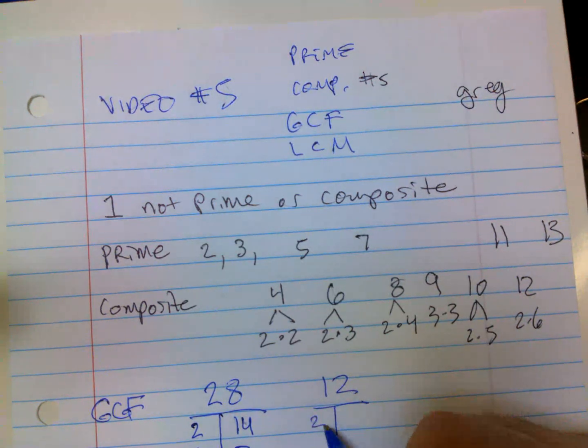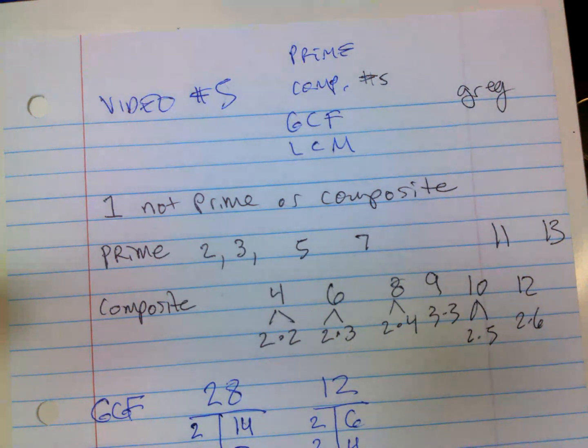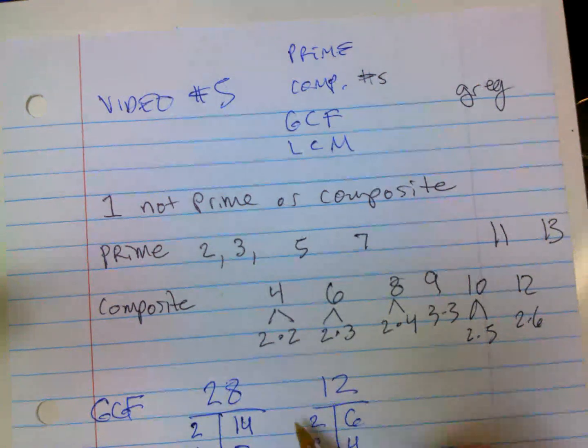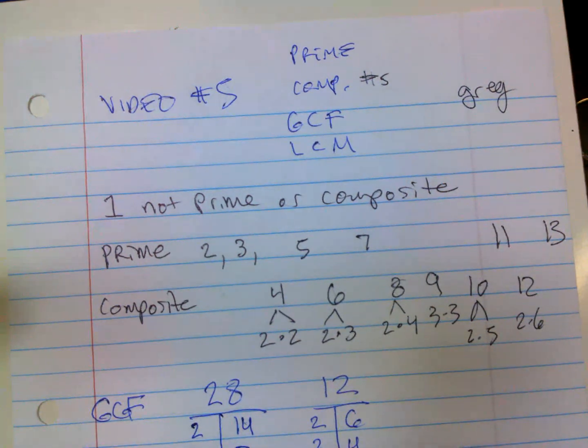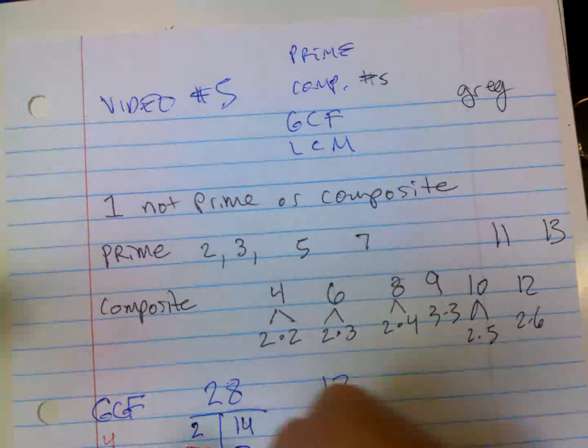Twelve is 2 times 6, 3 times 4 - that's it. So now what's the biggest number on both tables? Fourteen? No. Seven? No. Four? Yes. So 4 is the greatest common factor. All right, now